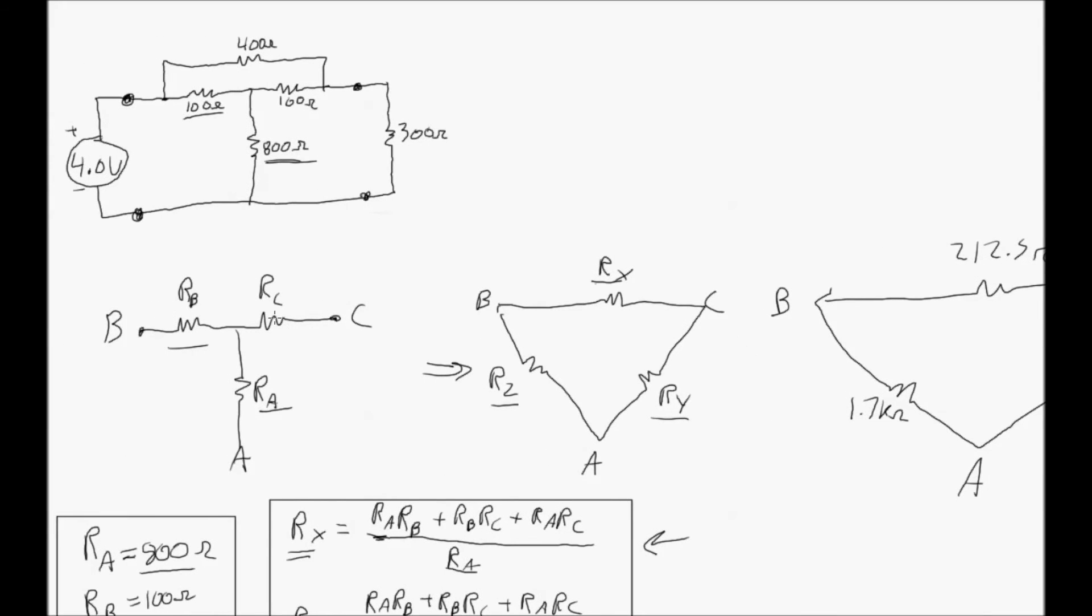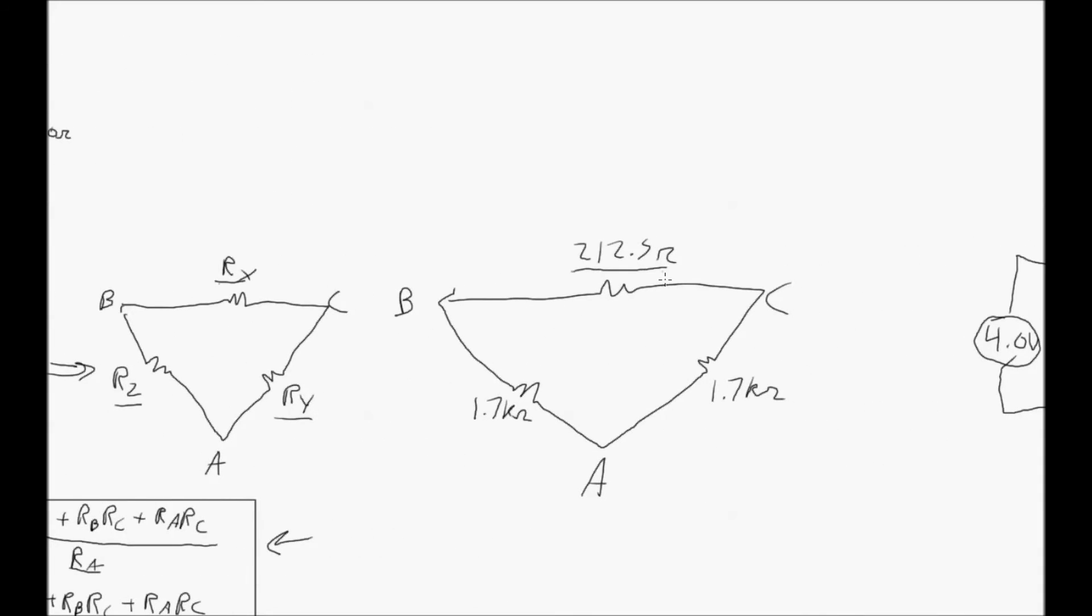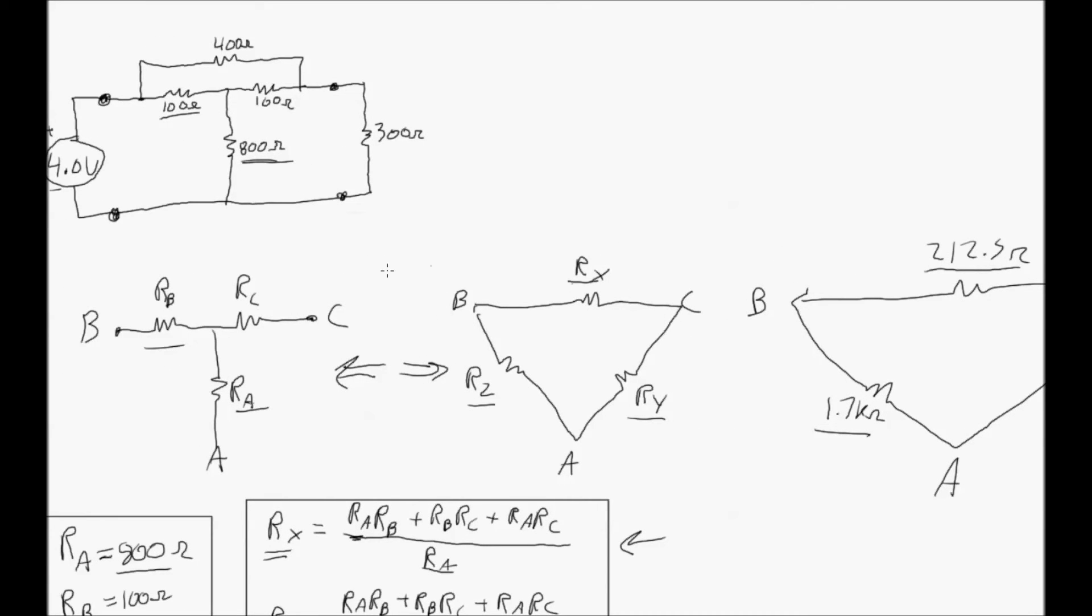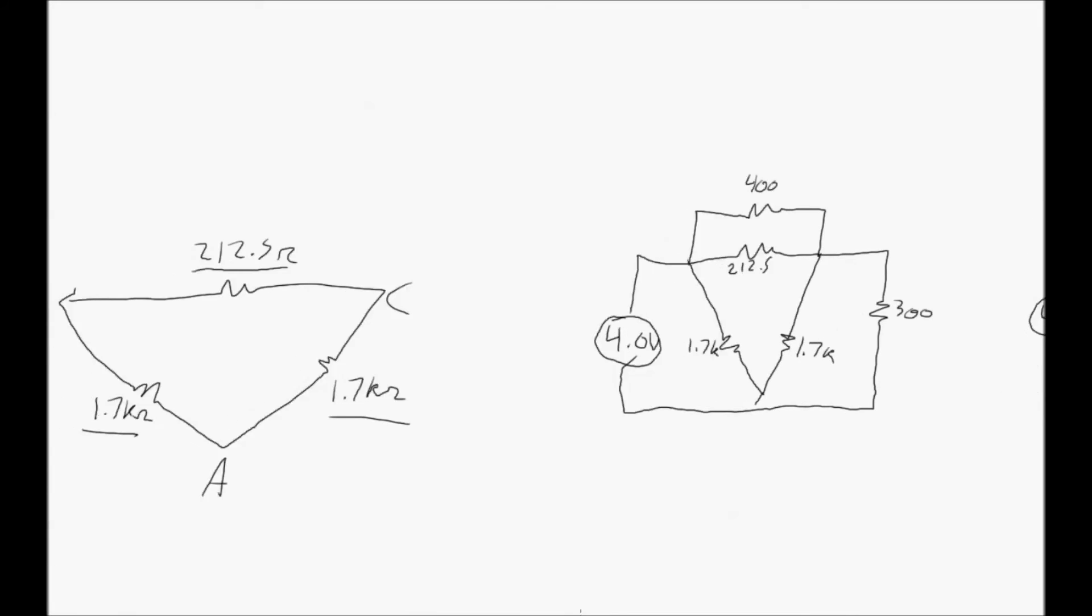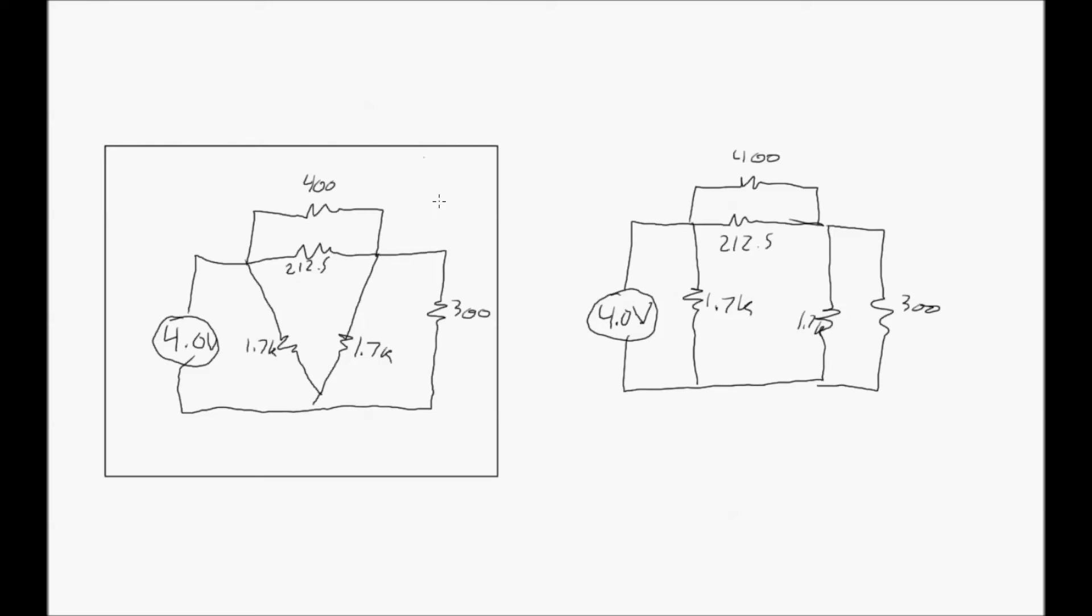So we completed the delta Y transformation. So from the T here to now a triangle with our RX, our RY, and RZ. Our values that we found were 212.5 for our RX, 1.7k for both our RY and our RZ. And we can plug that triangle into the T as it existed in the circuit. So plugging that back into the circuit, we get this on the right here. Where once was a T, now is a triangle. And to simplify even a bit more to make it easier to solve, we can break up this single point here into a solid wire, which is a much easier circuit to solve now.